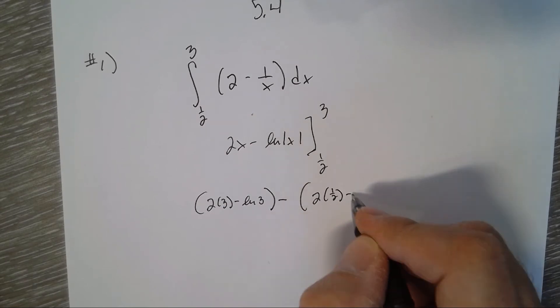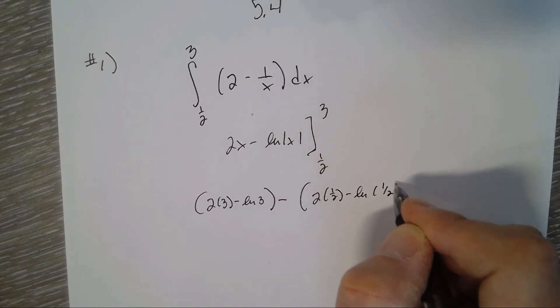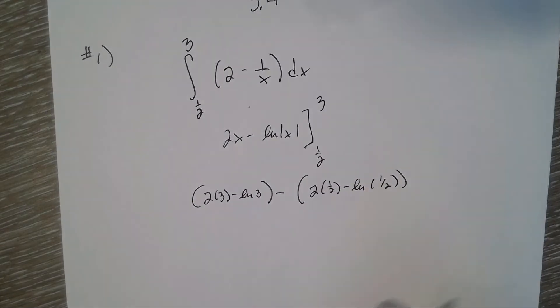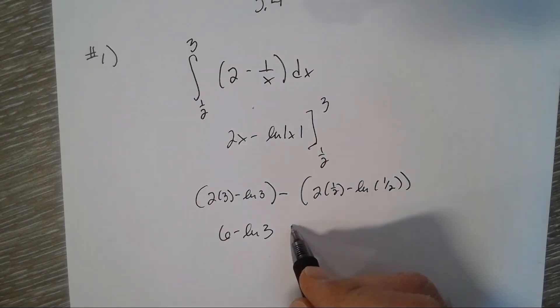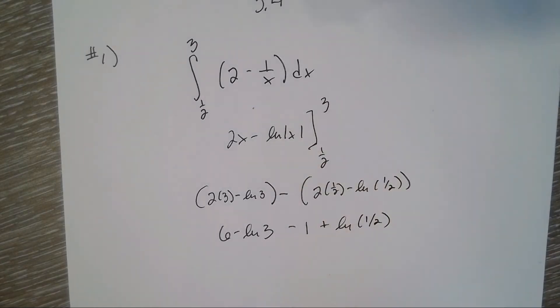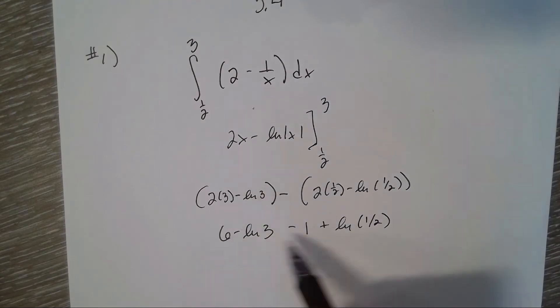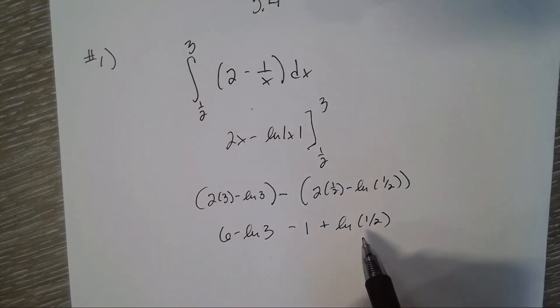So we have 6 minus natural log of 3 minus 1 plus natural log of 1/2. Now, 6 minus 1 is 5, but what's the natural log of 1/2?